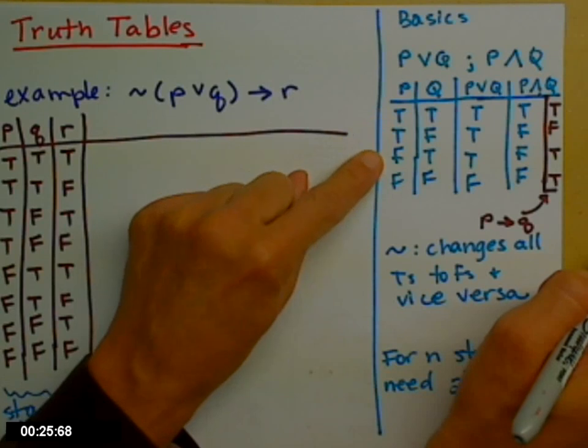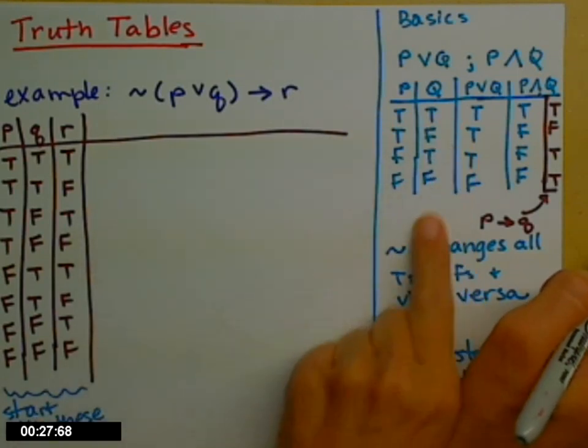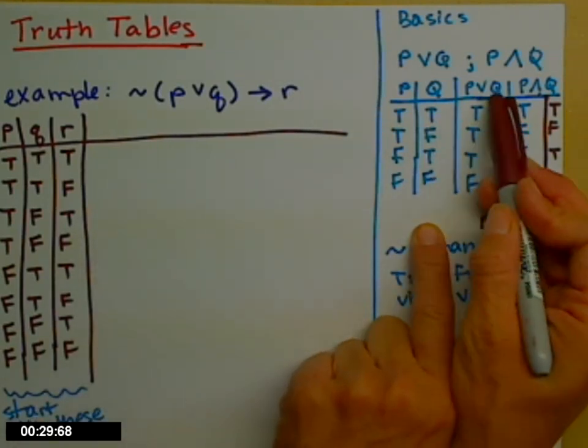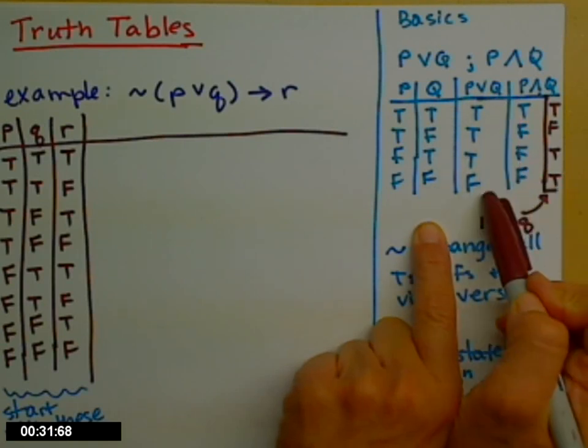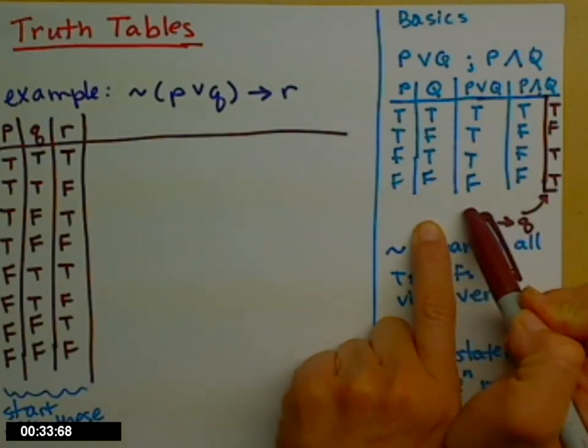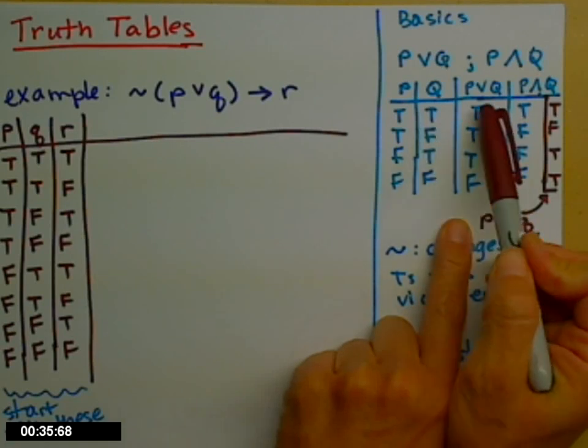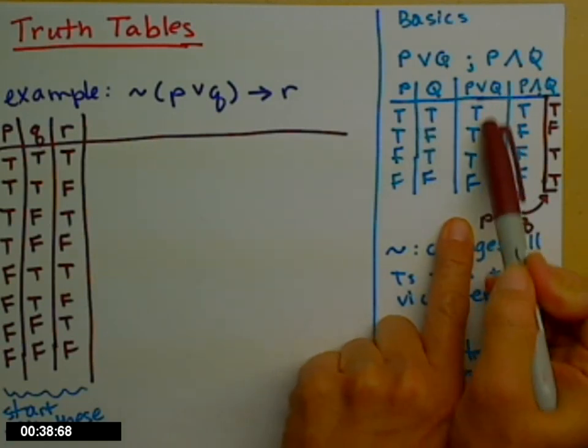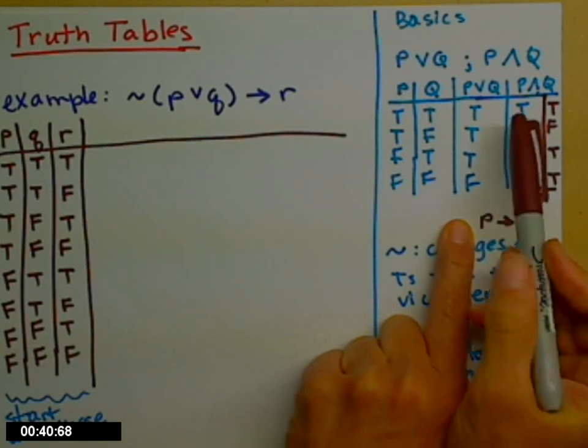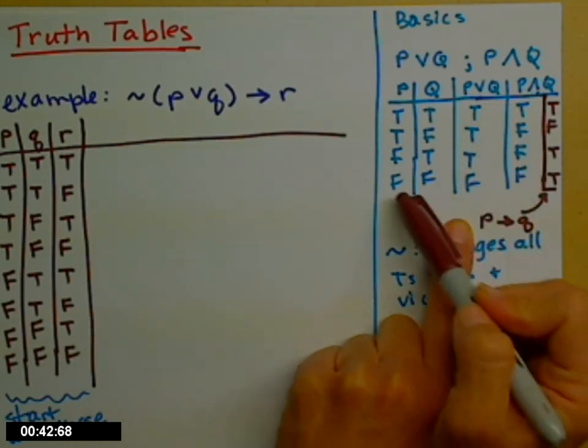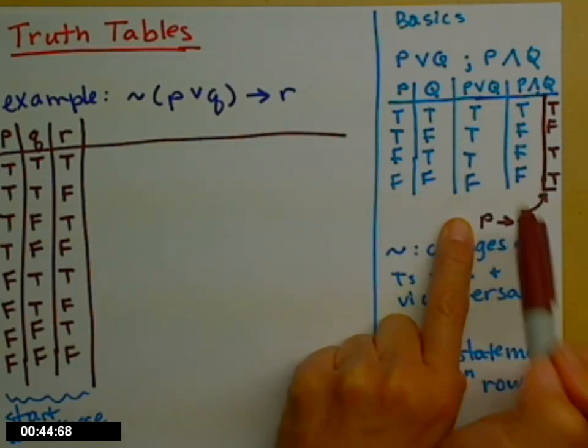The P's I go TRUE, TRUE, FALSE, FALSE, and the Q's I alternate, TRUE, FALSE, TRUE, FALSE. For OR, an OR statement is TRUE if either of the inputs was TRUE. So if P is TRUE or Q is TRUE, I'm going to put a TRUE in my answer column. So you'll notice the only FALSE I have there is when both P and Q are FALSE.